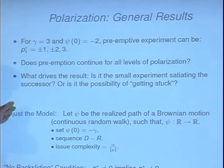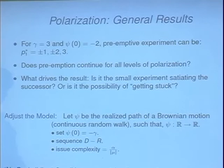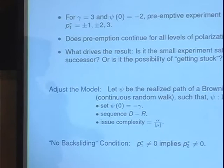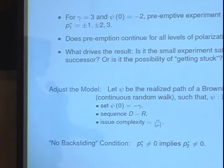So I've got one minute, so there's no point going through results. To answer this question of whether getting stuck is important — and the answer is going to be yes — I'm going to define a no-backsliding condition. This is saying: if the Democrat experiments in the first period, is it possible for the Republican to go back to the status quo? Is it possible to get stuck? The result is to say if that's not possible, then preemptively experimenting is never productive. So the conclusion here is that this getting stuck — this possibility that an experiment fails and you go back to the status quo or back to the known point — is crucial to the preemptive experimenting being profitable.